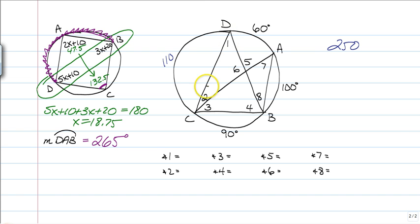Angle 1. We see that it is an inscribed angle. If it helps you again, you could trace the angle. It's half of 90, so angle 1 is 45 degrees. If we look at angle 2, angle 2 is inscribed to 60. So angle 2 is going to be 30 degrees.